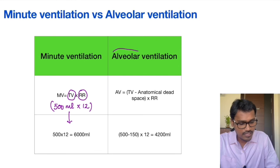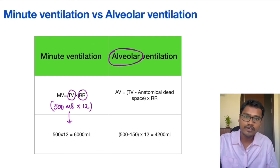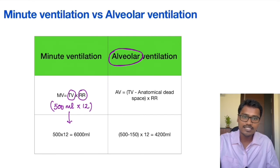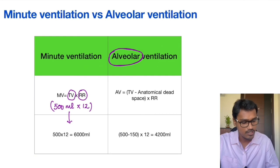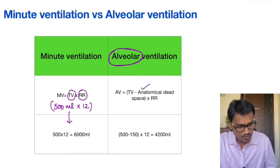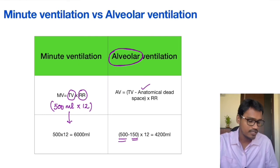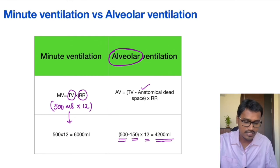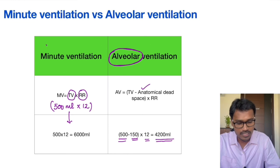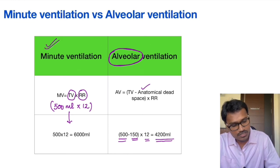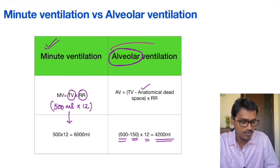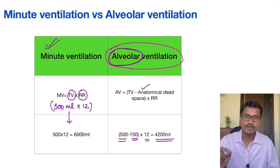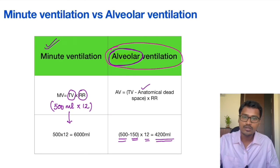Alveolar ventilation means the amount of air going only to the alveolar or gas exchange system. Since the anatomical dead space is not involved in gaseous exchange, we subtract that amount. So: (tidal volume 500 ml minus anatomical dead space 150 ml) multiplied by respiratory rate 12 gives us 4200 ml. In MCQs, students often calculate minute ventilation instead of alveolar ventilation — please pay attention to whether the question asks for alveolar ventilation or minute ventilation, because in alveolar ventilation you must subtract the dead space volume of 150 ml.